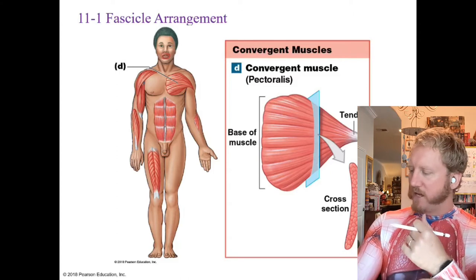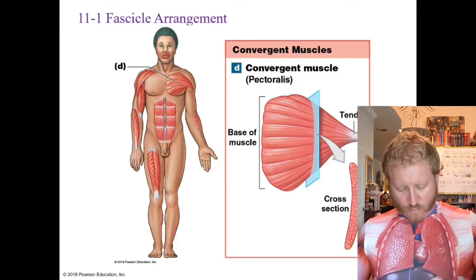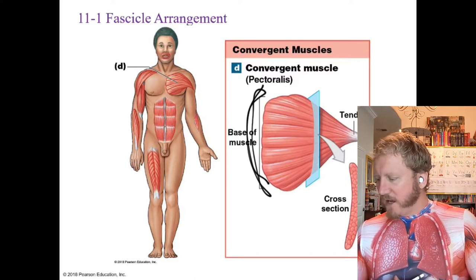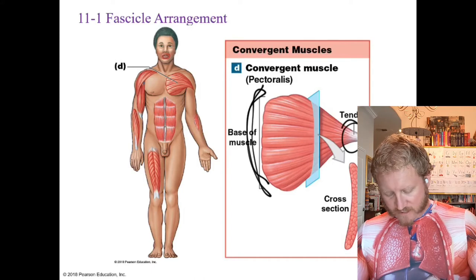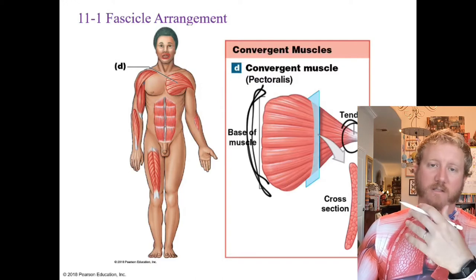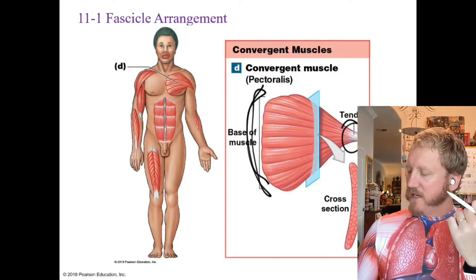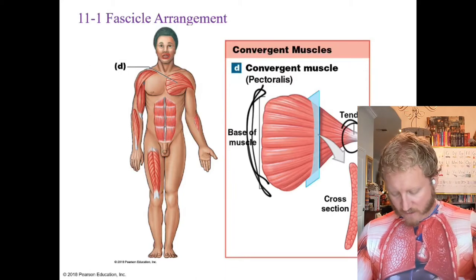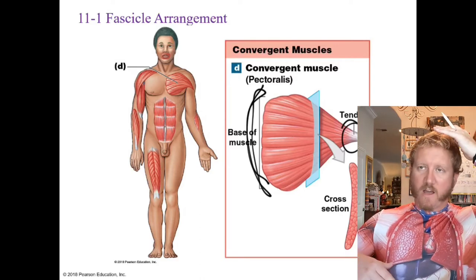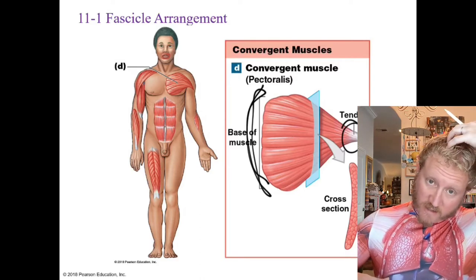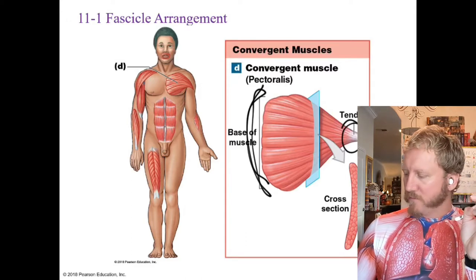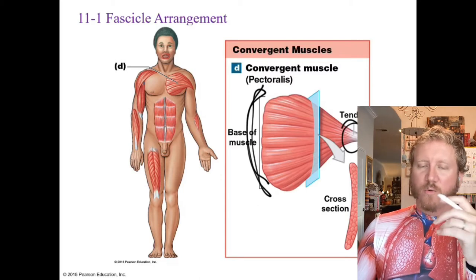Convergent muscles fan out at one end and converge to a single attachment site — like oyster shells. The muscle fibers spread out like a fan and then converge to a tendon. A good example is the pectoral muscle. The muscle may pull on a tendon, an aponeurosis — a thin sheet of connective tissue found in the scalp — or a raphe, which is a slender band of collagen fibers. Fibers pull in different directions based on activity.